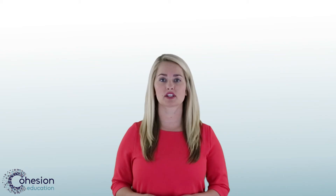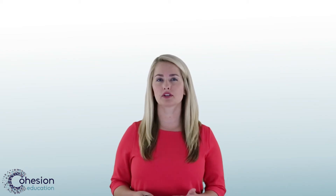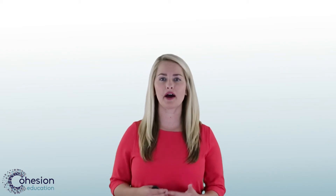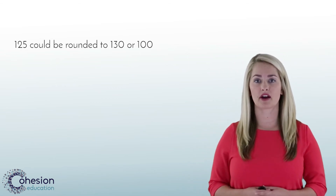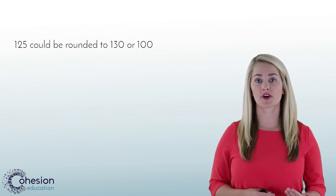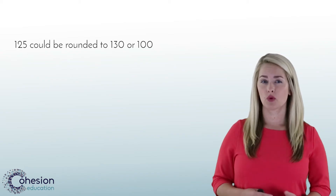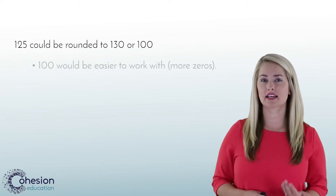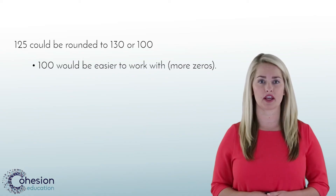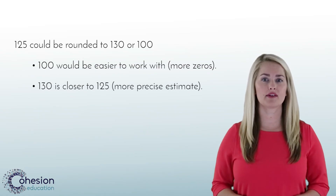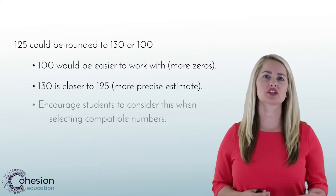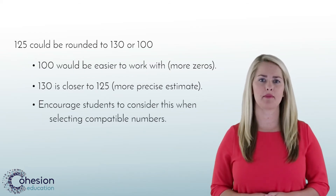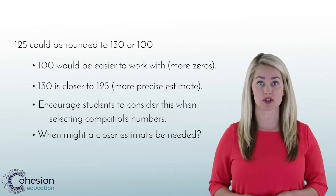Sometimes students will convert to compatible numbers randomly instead of thinking about why they're doing what they're doing. For example, 125 could be rounded to 130 or 100. Where 100 is an easier number to work with than 130, rounding to 130 will give you a more accurate estimate. Have conversations with your students about appropriate times to round more precisely.